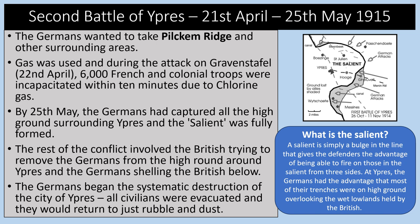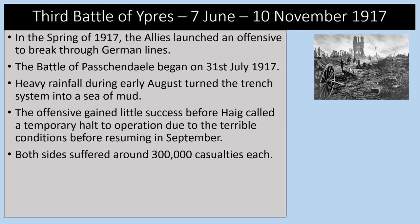The Second Battle of Ypres was from April to May 1915. The Germans wanted to take Pilckem Ridge and surrounding areas. Gas was used in the attack on Gravenstafel on the 22nd of April — 6,000 French and colonial troops were incapacitated within ten minutes due to chlorine gas. By the 25th of May, the Germans had captured all the high ground surrounding Ypres and the salient was fully formed. The Germans then systematically destroyed the city of Ypres. All civilians were evacuated, returning to rubble and dust. The salient is a bulge in the line giving defenders the advantage of firing on those in the salient from three sides.